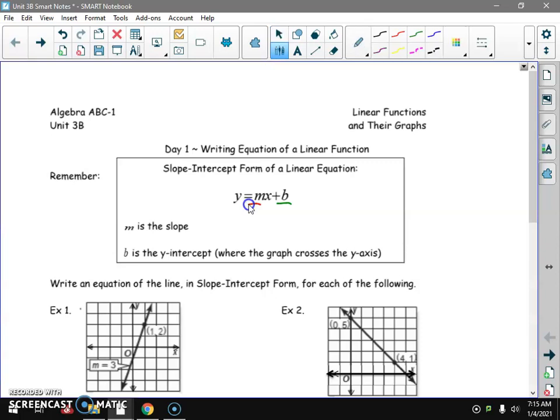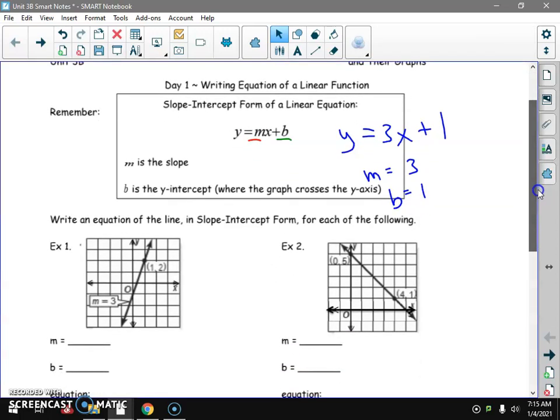So an example of the equation would be Y equals 3X plus 1, and the M would be equal to 3 and the B would be equal to 1. And what M stands for, we said it's slope. And we remember that slope is Y minus Y over X minus X.